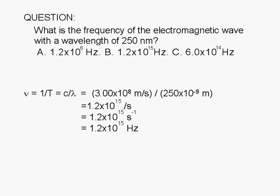So we use the formula. The frequency nu is equal to the speed of the electromagnetic wave c, which is 3.00 times 10 to the 8th meters per second, divided by the wavelength lambda, which is 250 nm.